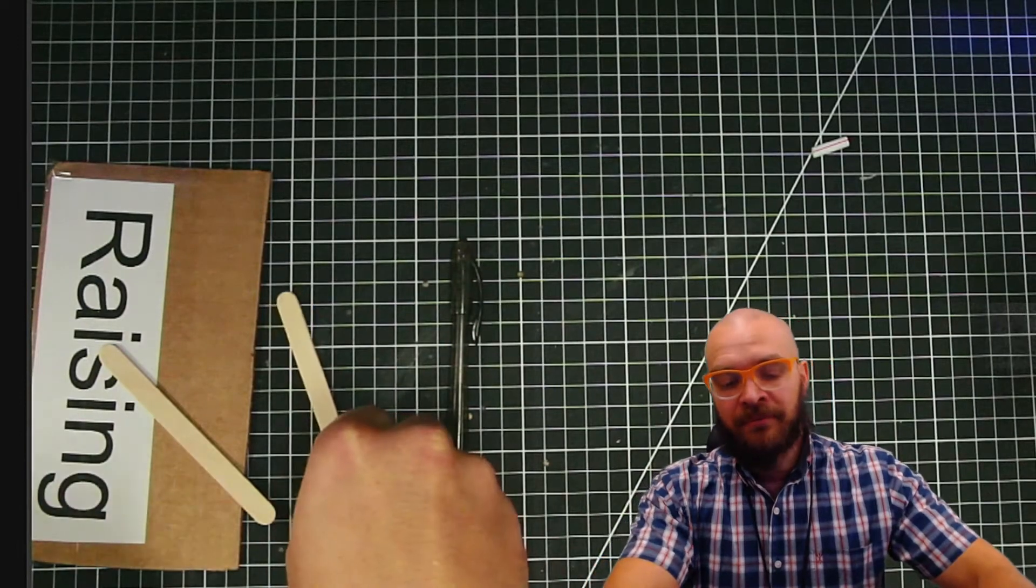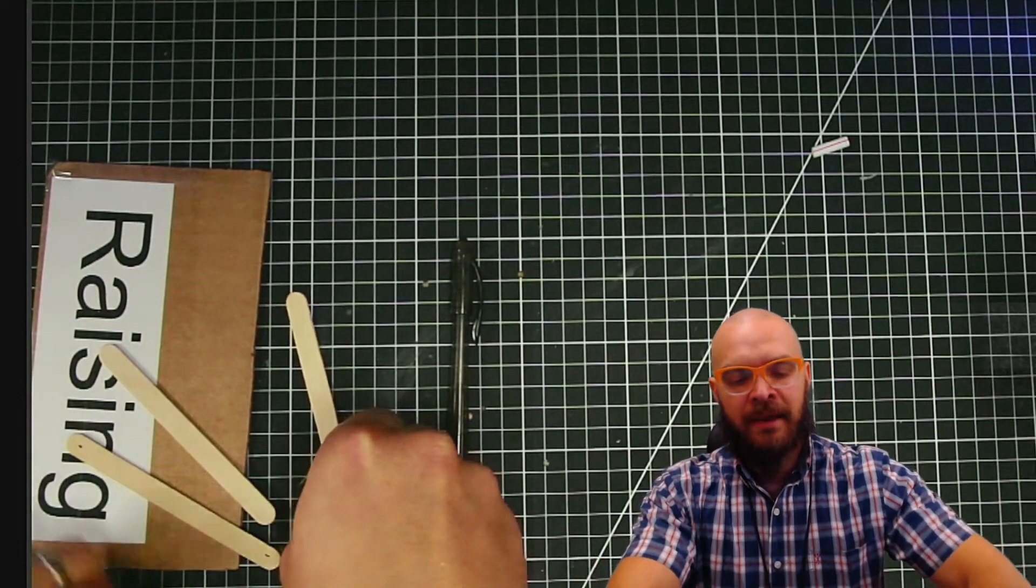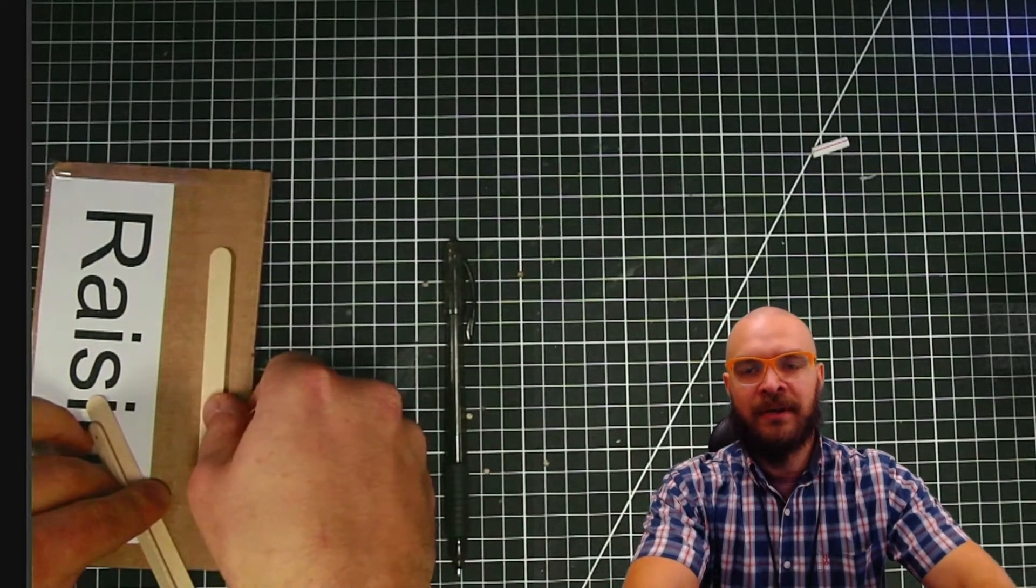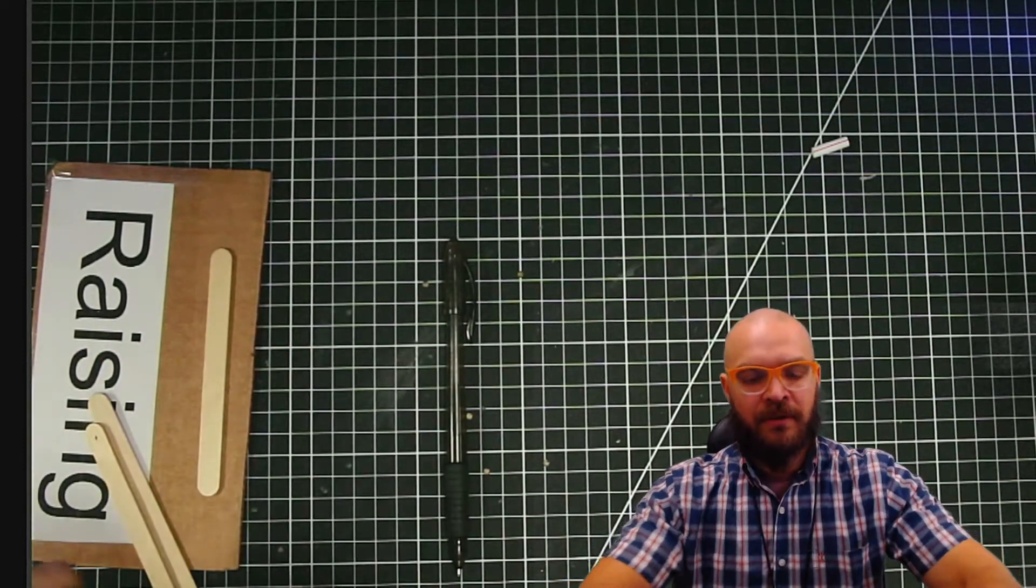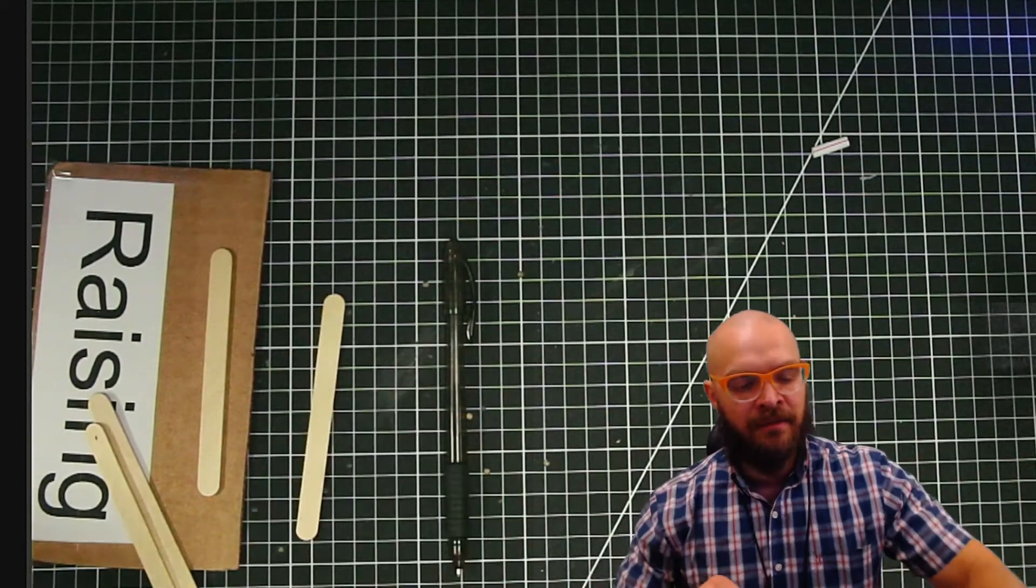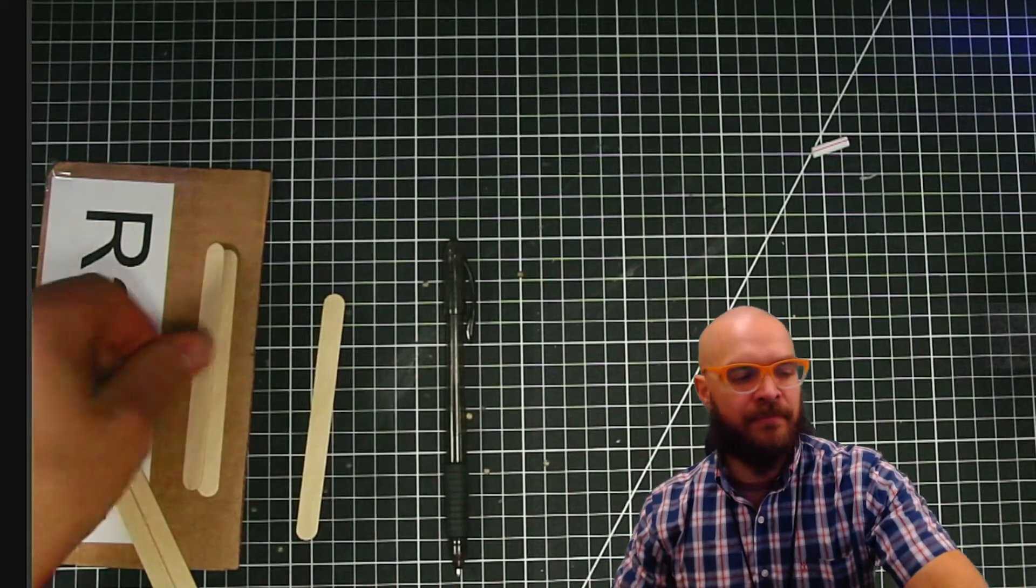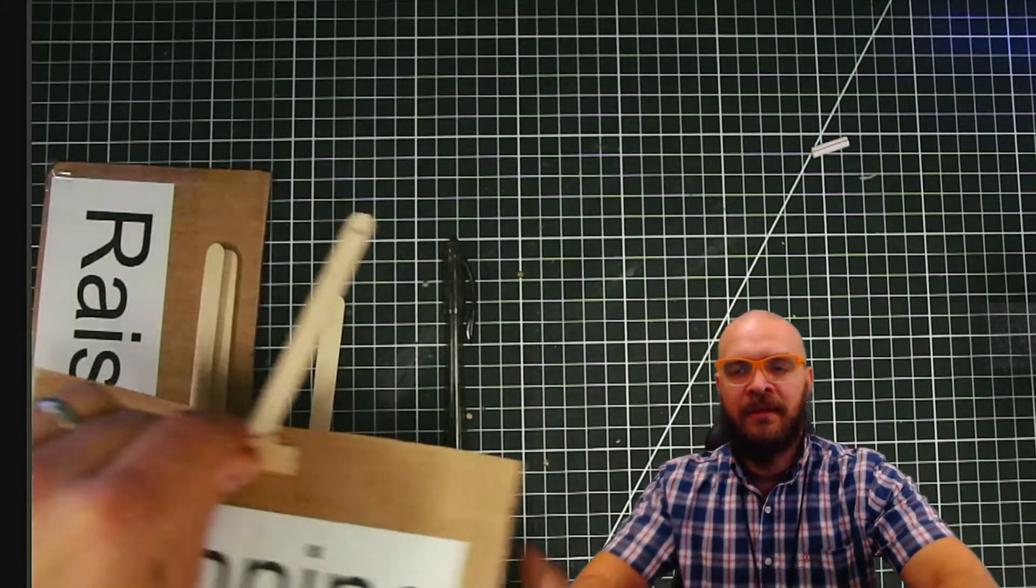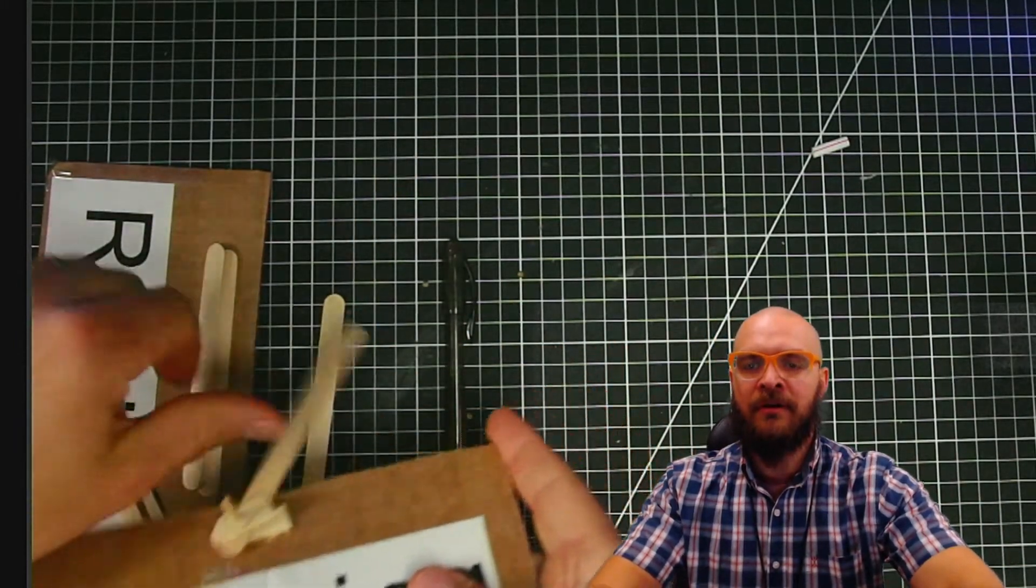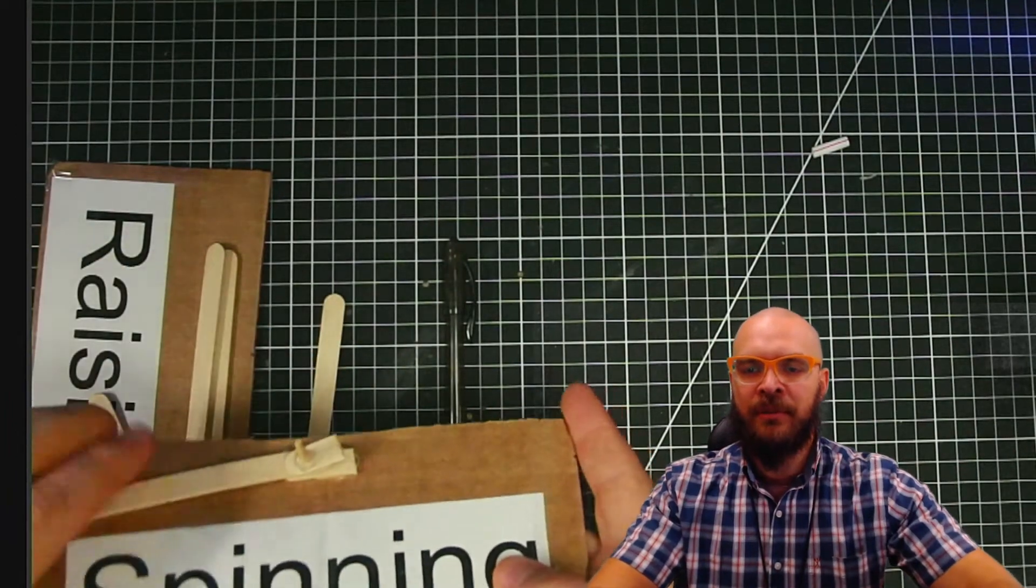This will take four popsicle sticks, and we're going to have to get some special marks on each one. Now, this one is going to get glued down. This is the one that's going to be moving up and down, and now that I think about it, we should double those up, just like we did with the spinning one. We've got one below and one above, so that you can glue to the pin better.